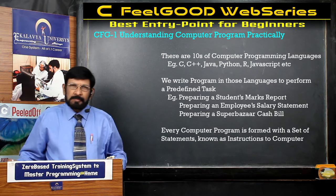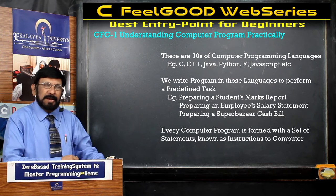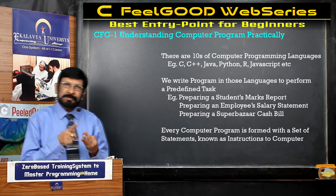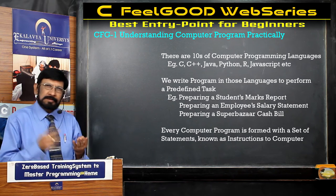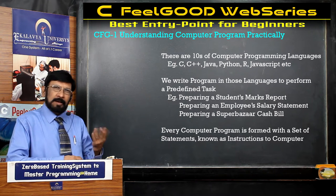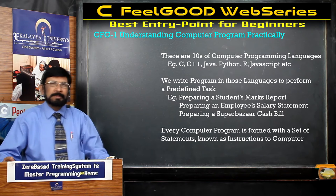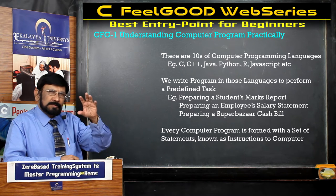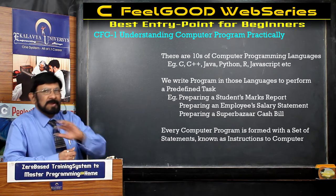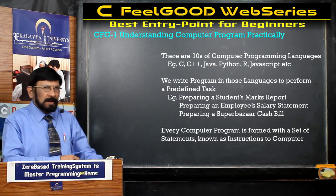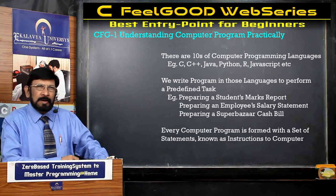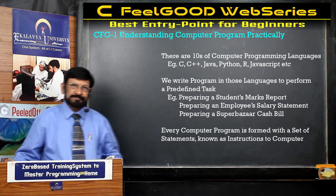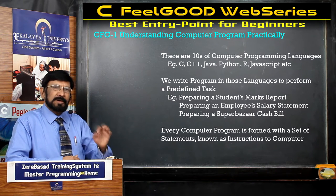In the programming world there are tens of programming languages — namely C, C++, Java, Python, R, JavaScript, Swift, Perl, Ruby — many dozens of programming languages are there. Every programming language has its own unique features, strengths, as well as weaknesses. Now in order to write a computer program we have to choose one of those languages. Now we have chosen C language.